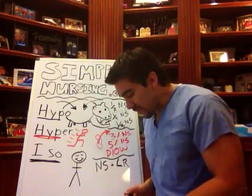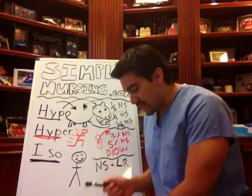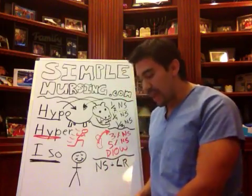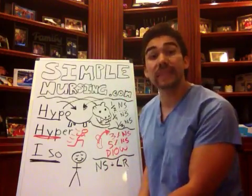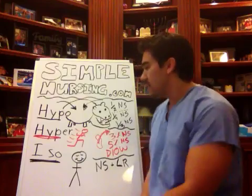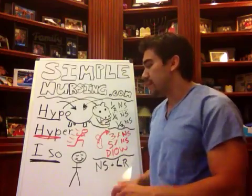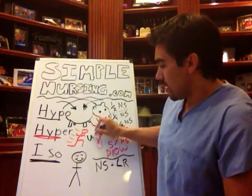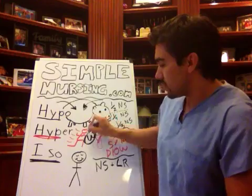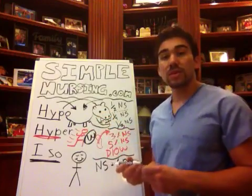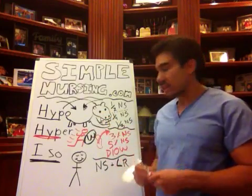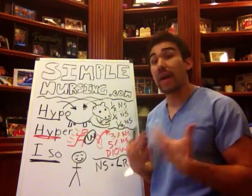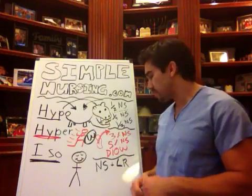So that is our hypertonic solutions. Usually anything with dextrose — D5W — and all the W solutions are our hypertonic solutions as well. So W's and small, itsy-bitsy numbers are our hypertonic solutions.